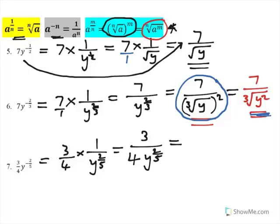Then I go back to those rules at the top on the right hand side, and I think of what root it is that I'm finding. Well, n is 5, because it's m over n. So, it's the fifth root of y all squared.